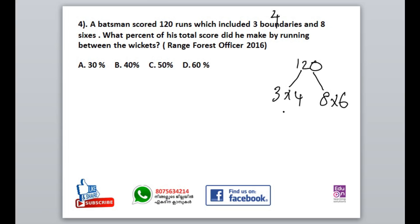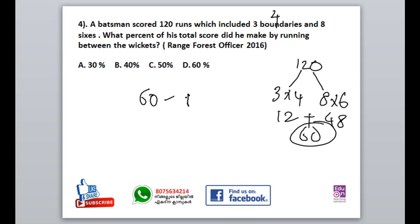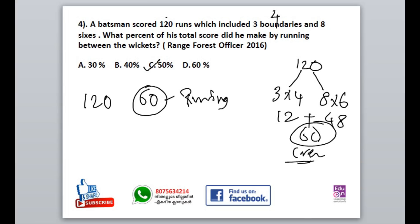The score is: 3 boundaries gives 12 runs and 8 sixes gives 48 runs — total 60 runs from boundaries and sixes. So 60 runs were scored from boundaries and sixes, meaning only 60 runs are running between the wickets out of 120. A percentage of the total score he made by running between the wickets.